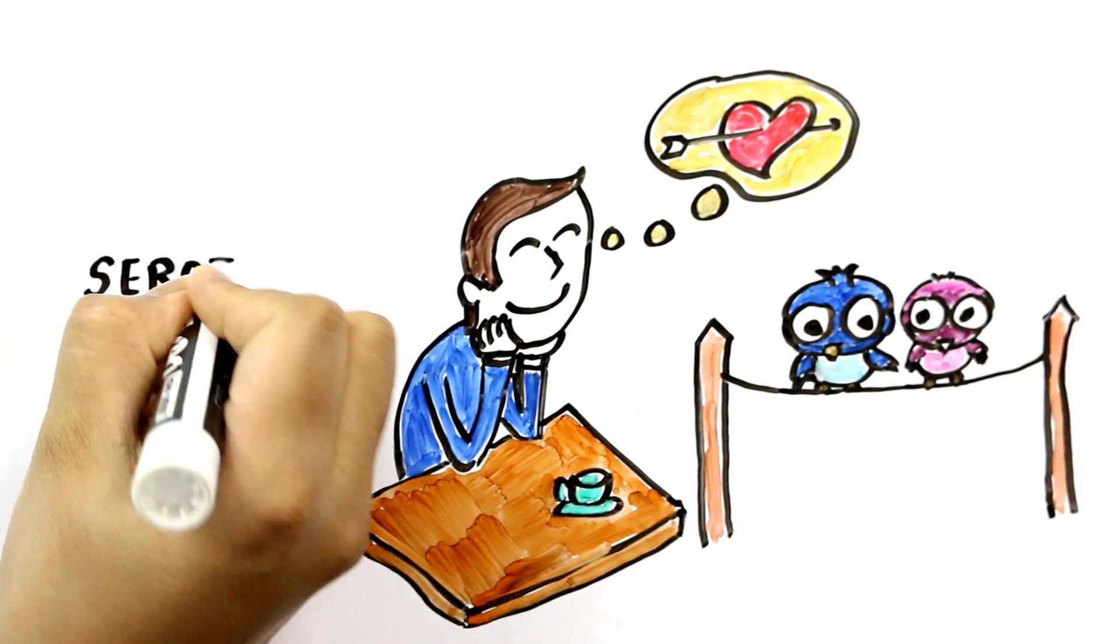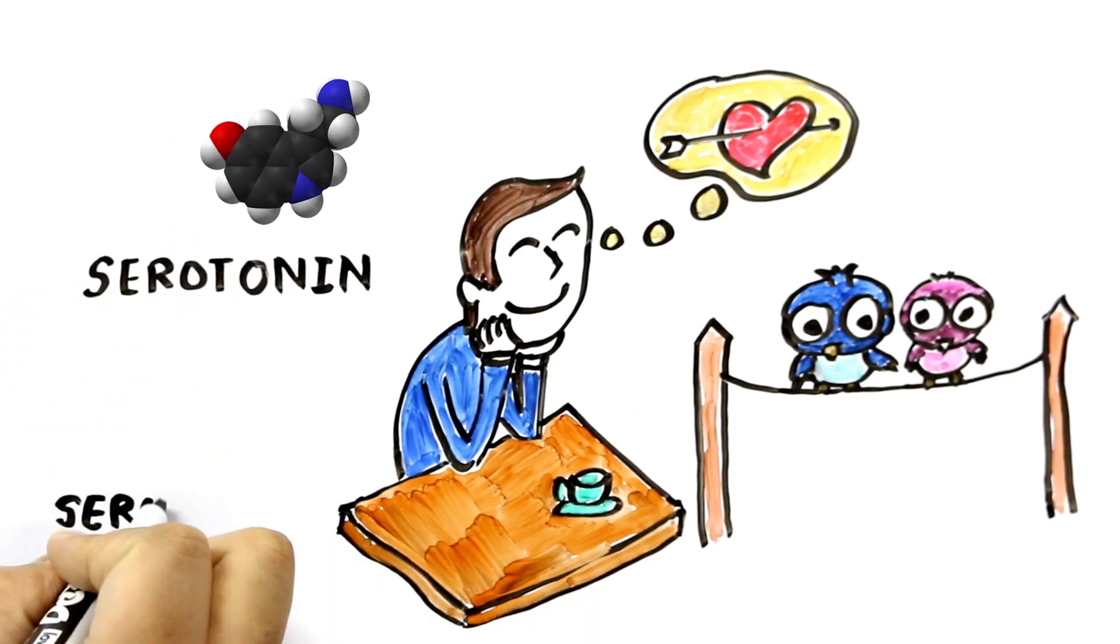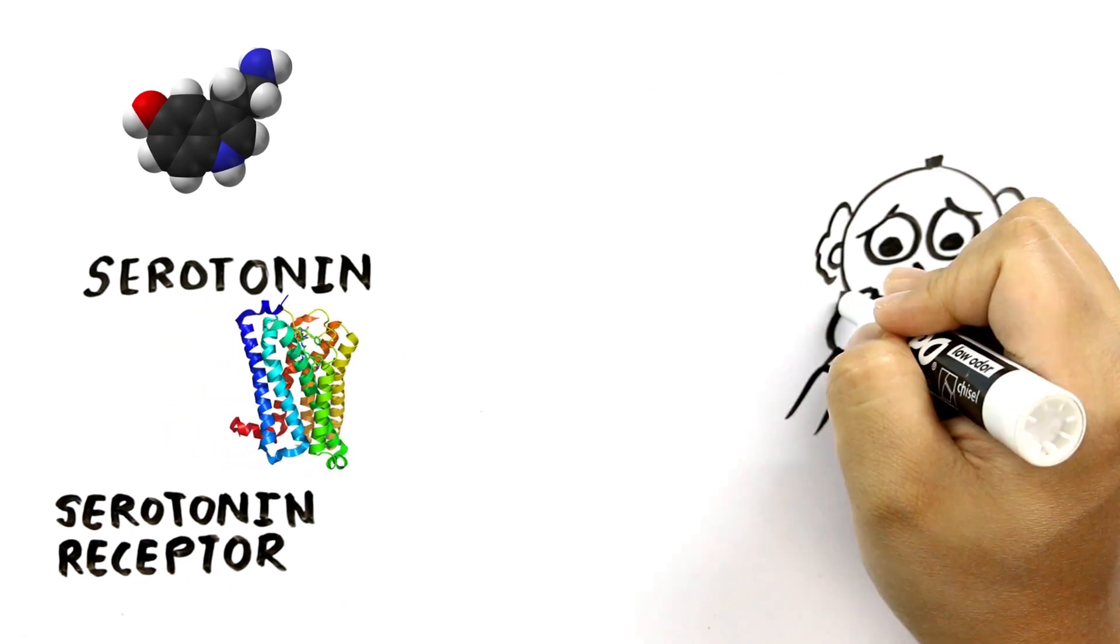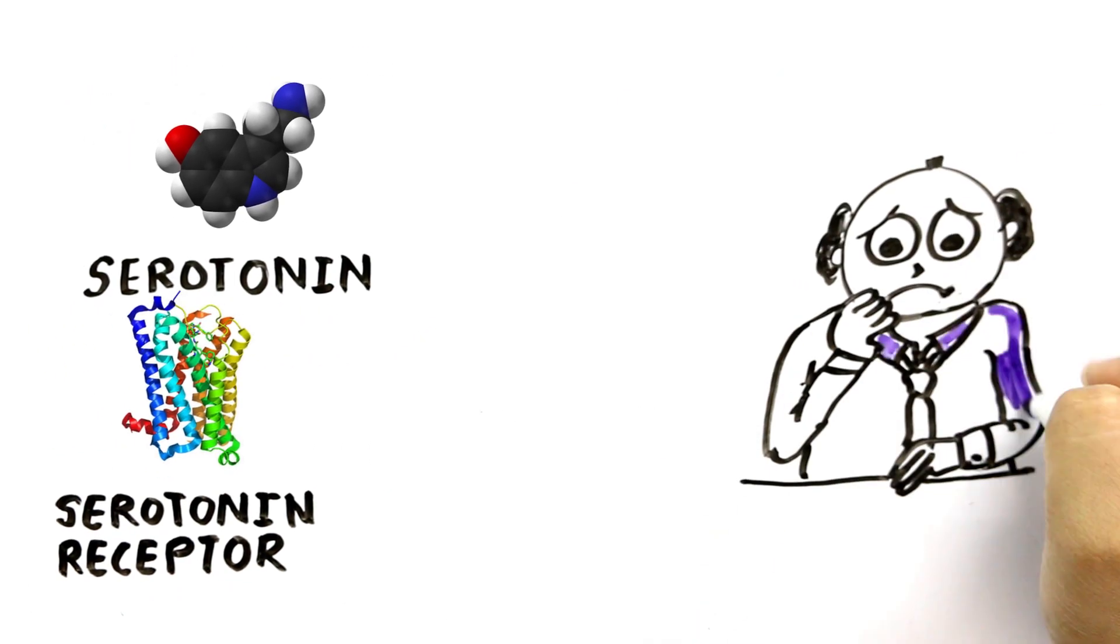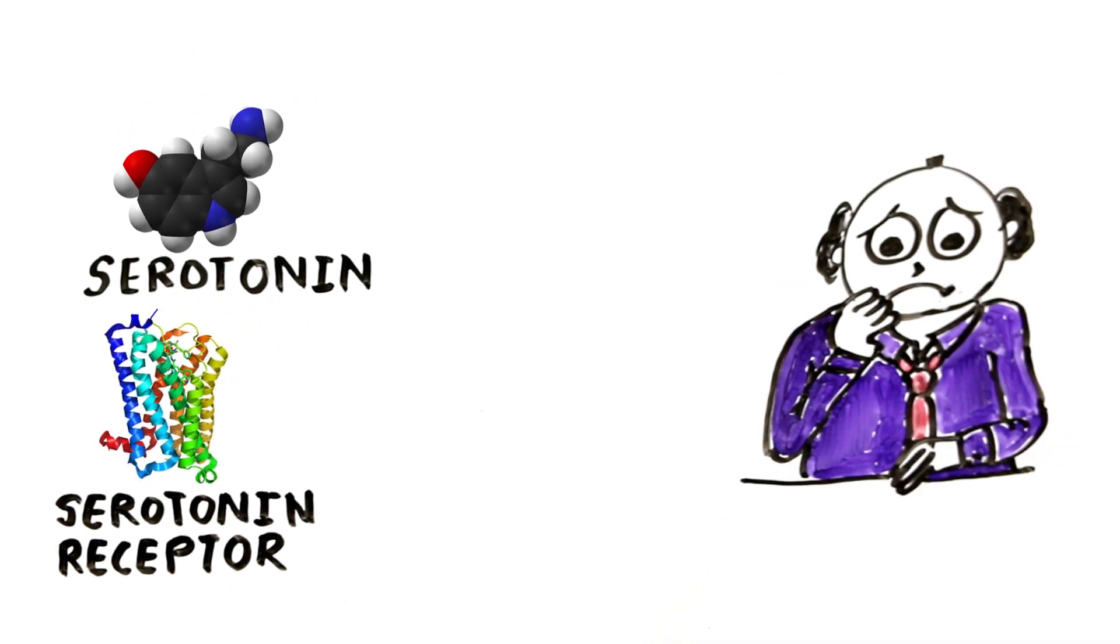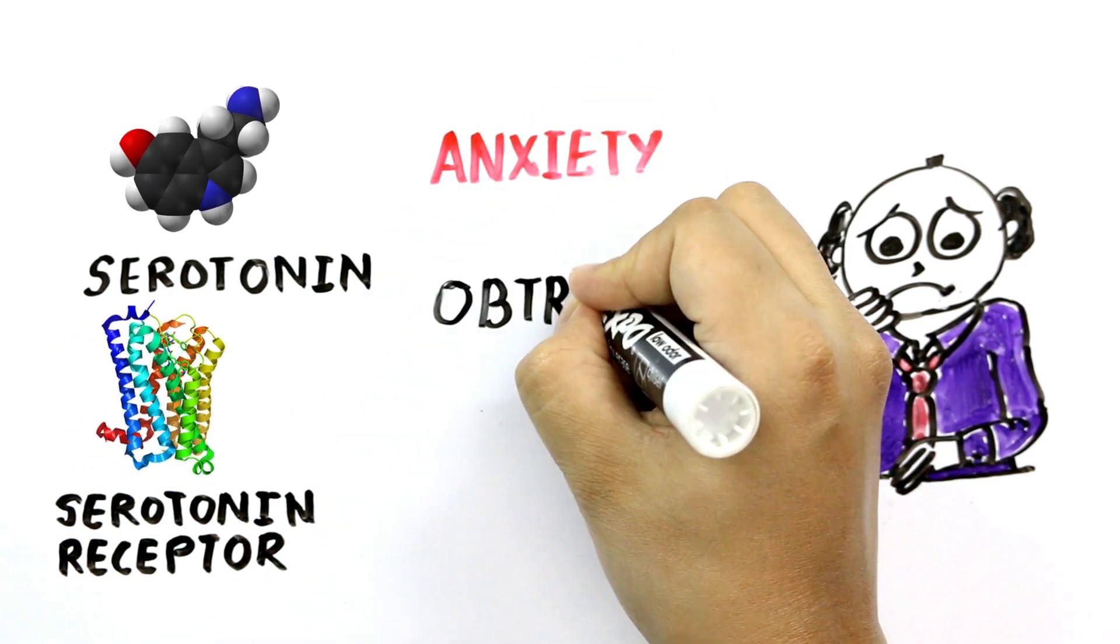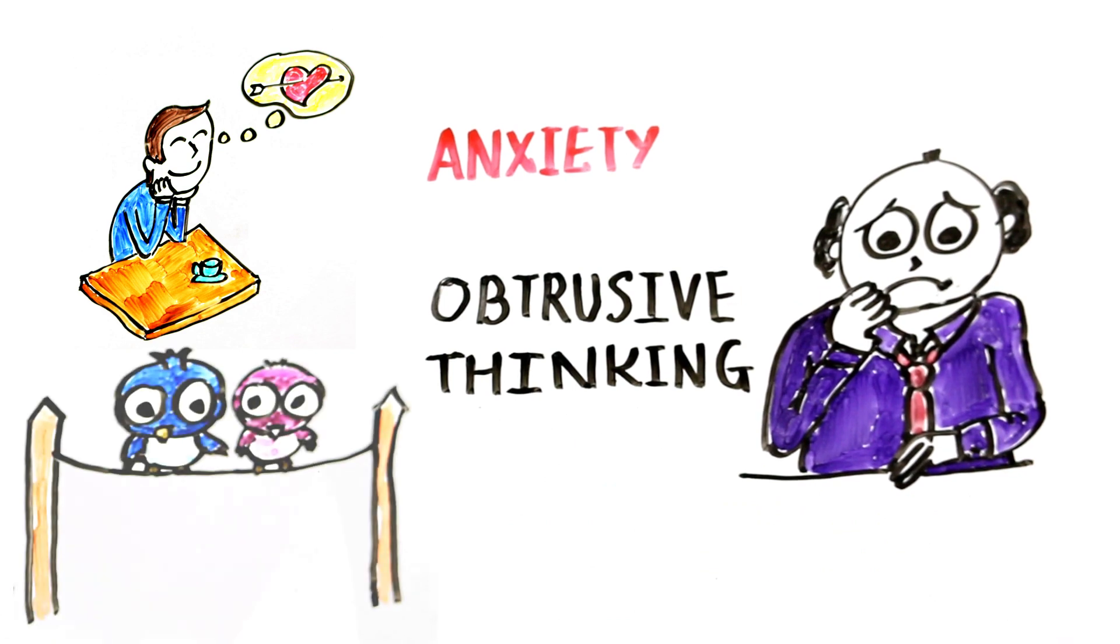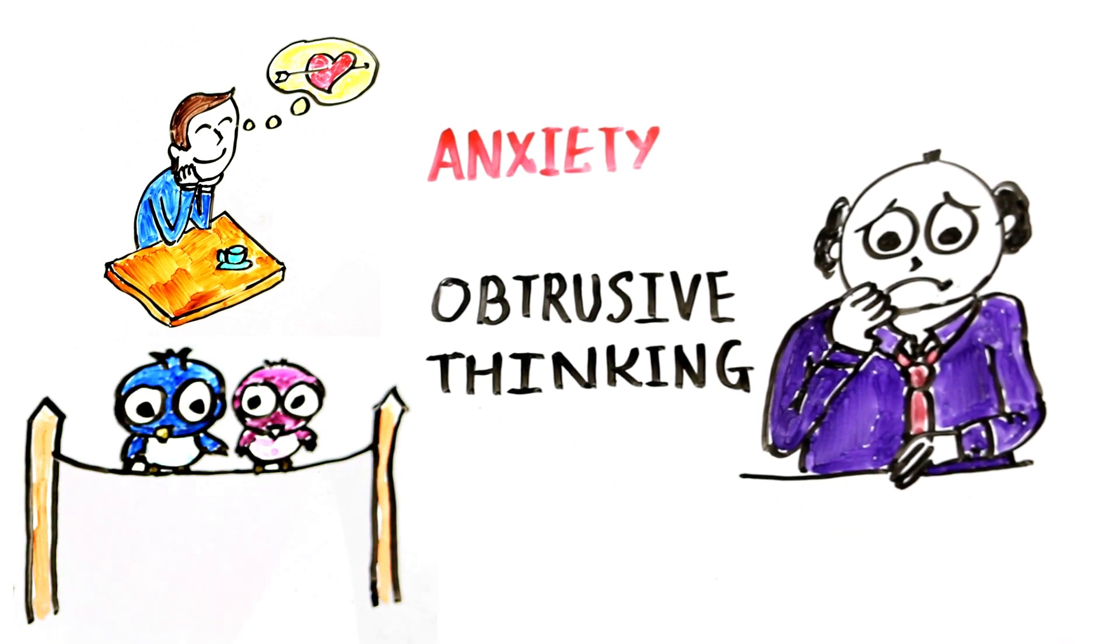Early stages of romance are linked with diminished levels of the neurotransmitter serotonin and of a serotonin receptor. These two molecules are also depleted in obsessive-compulsive disorder. Since both conditions to different extents also give rise to feelings of anxiety and obtrusive thinking, it's tempting to think of early love as a mild temporary form of obsessive behavior.